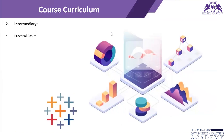Then we'll go to the intermediary level of Tableau, where we'll cover practical basics. This includes the types of data connections available in Tableau — that is live connection and extract connection — why you need an extract connection, and how to create one. We'll also cover sets, measures, dimensions, continuous and discrete variables, and the various data types available in a Tableau workbook. Post that, we'll see all the filters available in Tableau: context filters, extract filters, quick filters, dimension filters, and measure filters.